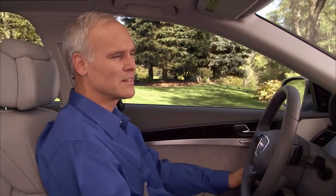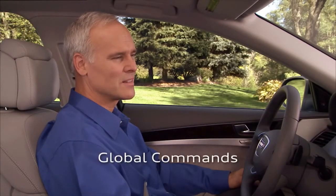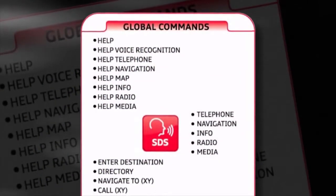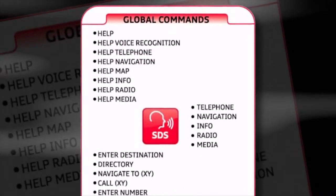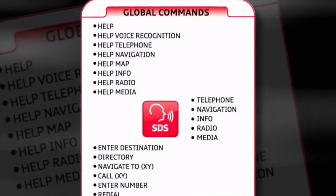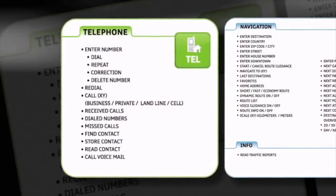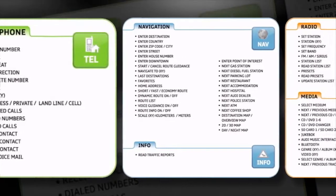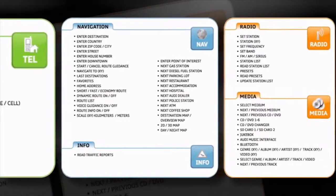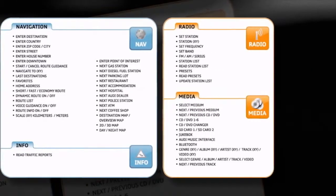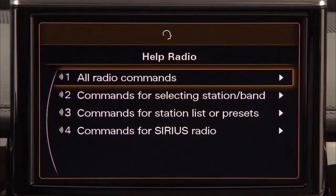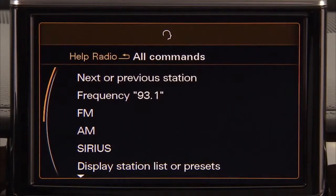The voice recognition system uses two basic types of commands: global commands and function commands. Global commands are commands that can be accessed from any menu and include commands such as help, telephone, or enter destination. Function commands can only be used within a specific MMI function, such as enter number in the telephone function or set station in the radio function. If at any time you're unsure of what command you want to use, just say help and the system will assist you with a list of possible commands for the function you're currently using, or it will give you a tip as to what command you might want to use.